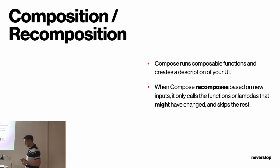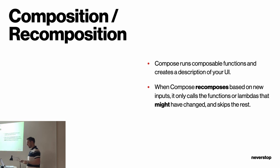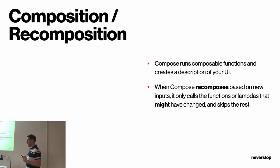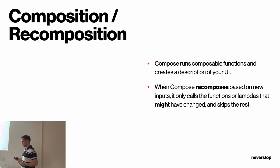We'll focus on the first phase because this is the most important one — we write the composable functions. Compose runs composable functions and creates a description of your UI. When the data changes, it runs the whole composition again. It tries to figure out what has changed and minimize all three phases. They run on every frame, but Compose tries to be smart and skip whatever is possible — sometimes it just needs some of our help.